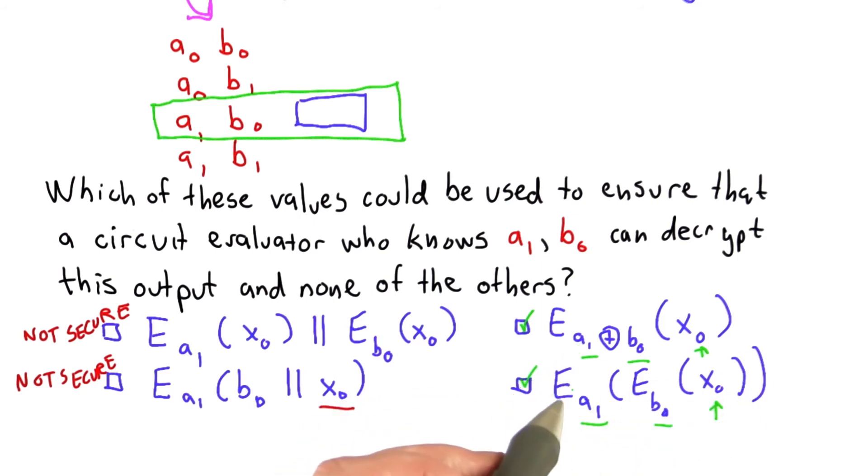They also couldn't do both of these. They could do the first one if they know a1, but they'd just get an encrypted value there, and they couldn't decrypt the second one to get the value of x0.